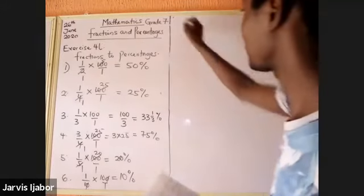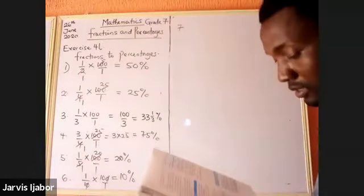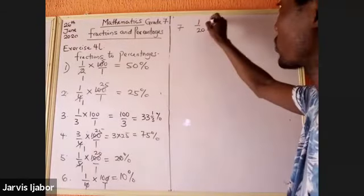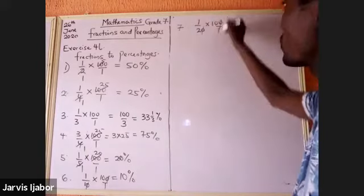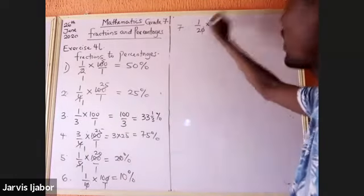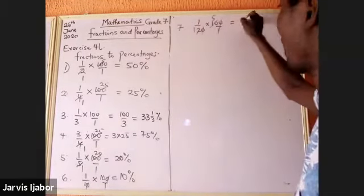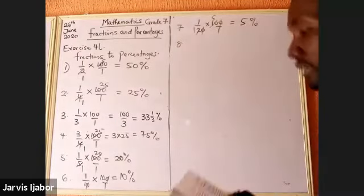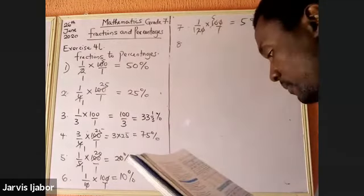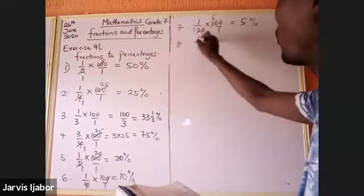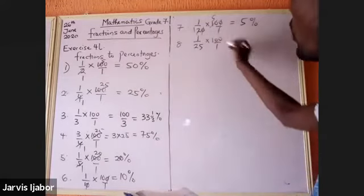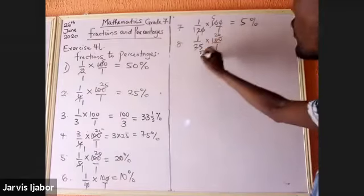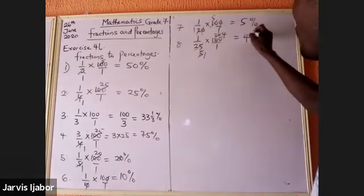Number seven: 1 over 20 times 100 over 1 — cancel zeros, 2 goes into 10 five times — that gives 5 percent. Number eight: 1 over 25 times 100 over 1 — 5 goes into 25 five times, 5 goes into 5 once, 5 goes into 25 five times, 5 goes into 4 — that gives 4 percent.